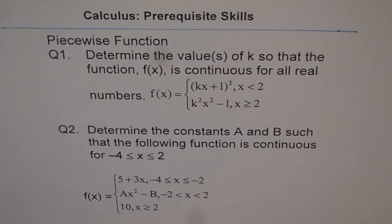Question number two: Determine the constants A and B such that the following function is continuous for -4 ≤ x ≤ 2. Remember, the value of x should be between -4 and 2.